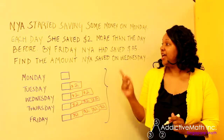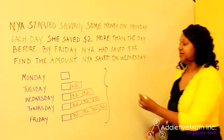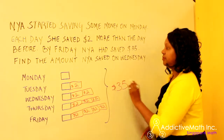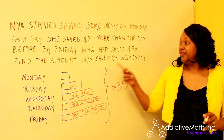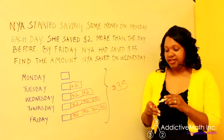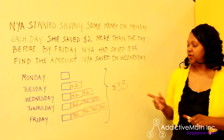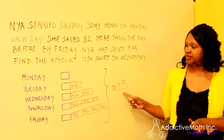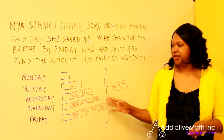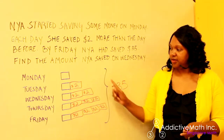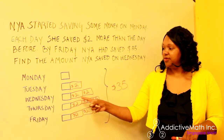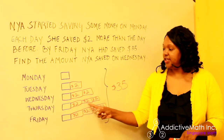By Friday, Naya had saved $35 — so that's our total. And we need to find the amount that she saved on Wednesday. So basically what we have here is $35 and we have all these twos. First thing we need to see is what do all of these add up to. So let's count by twos.